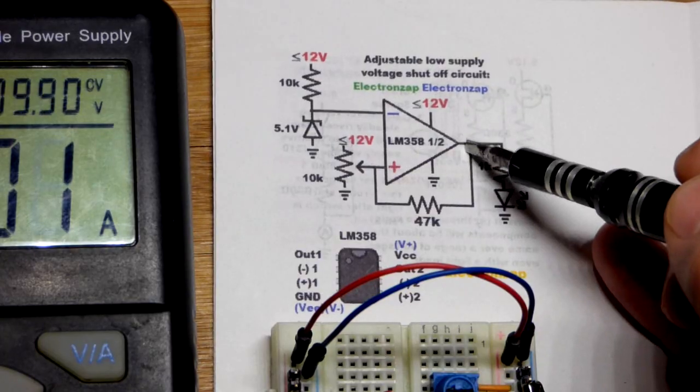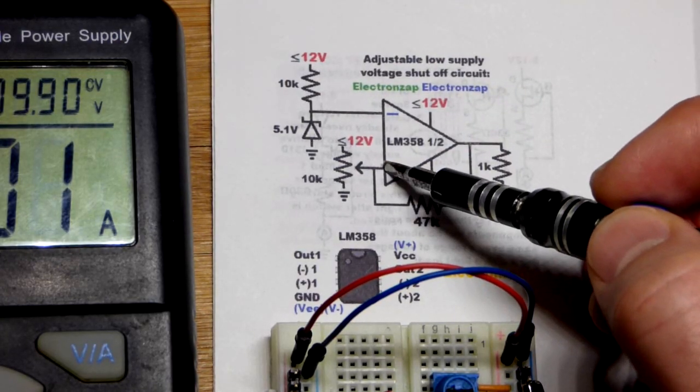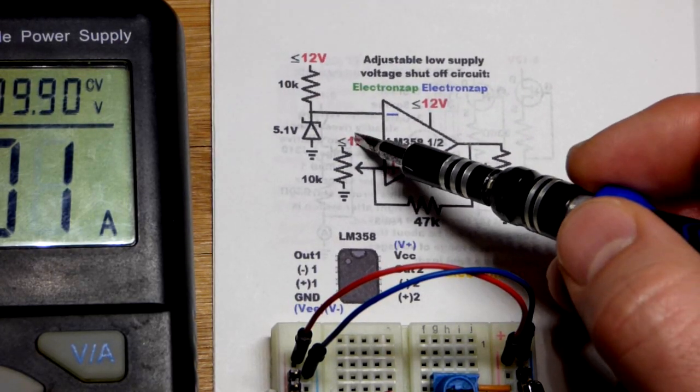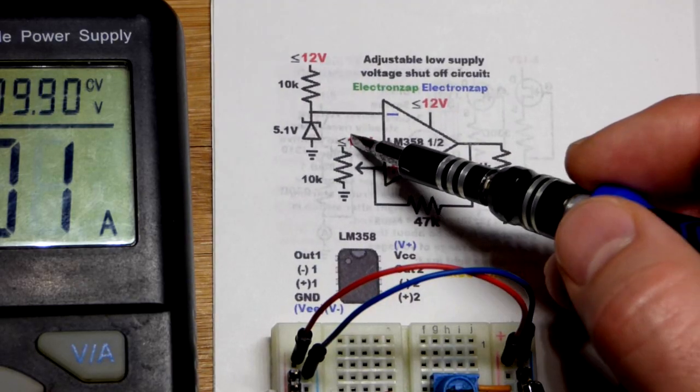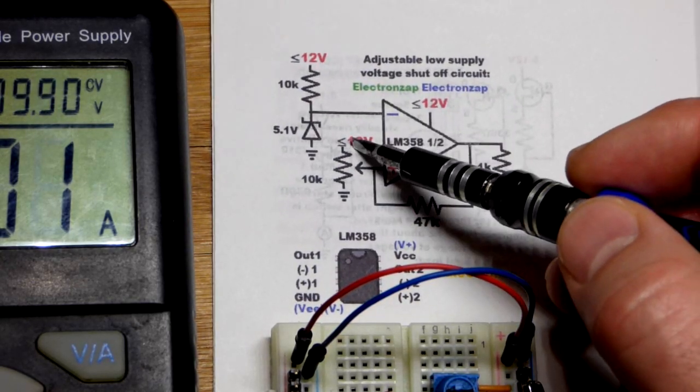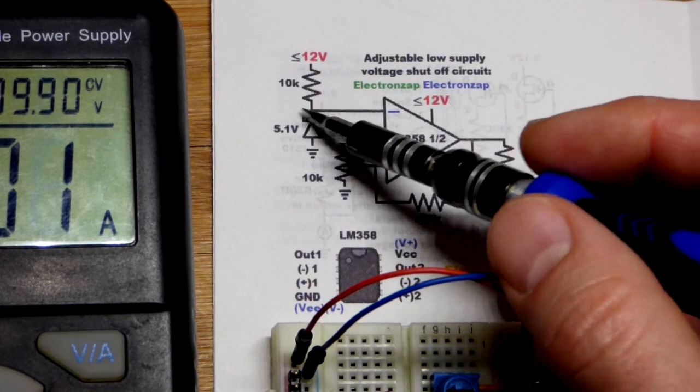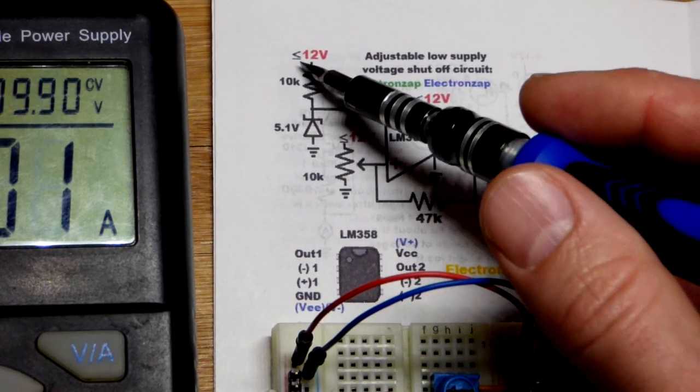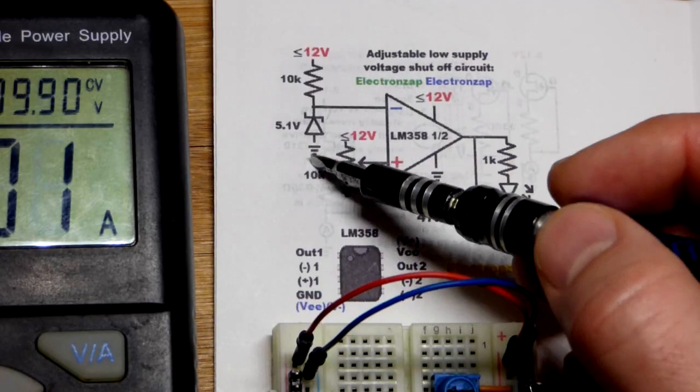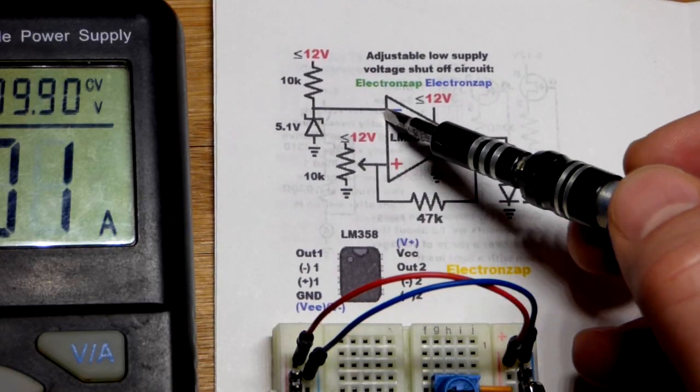Now we have the non-inverting input. Remember, the output wants to be more like the non-inverting input. So if you've got a higher voltage at the non-inverting input than the inverting input, 5.1 volts in this case because that's a zener diode. You use them reverse biased. When current's flowing through them, they build up their zener voltage across.